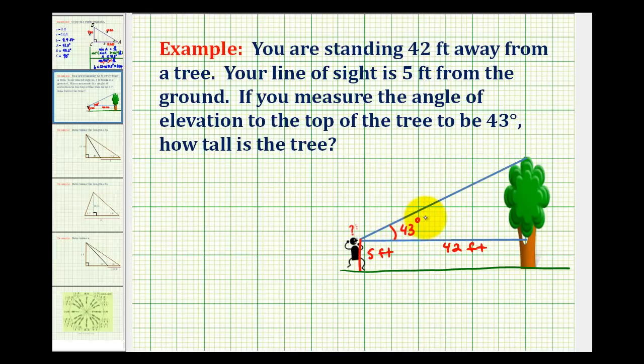To determine the height of the tree, we'll have to do two things. We first need to determine the length of this side of a right triangle. Let's call this x. And then we'll have to add this length to the length from the line of sight to the ground, which again is five feet. So if we let h equal the height of the tree, it would be x plus five.